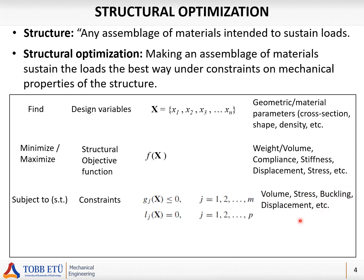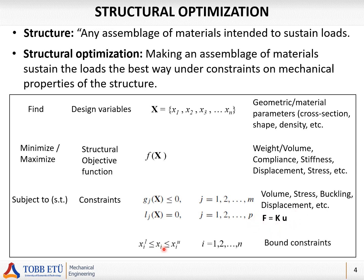Constraints in structural optimization can include volume, stress, buckling, and displacement — various mechanical properties. However, if something is used as the objective function, we generally don't also use it as a constraint. For example, if we are minimizing volume as the objective, don't add a volume constraint — instead constrain displacement, stress, or buckling. Similarly, if minimizing compliance, use volume as a constraint rather than compliance. The general rule: use a quantity in the objective or in the constraints, not both. We may also have equality constraints such as the finite element equation F = K·u (linear static analysis), plus lower and upper bounds on design variables, called bound constraints.